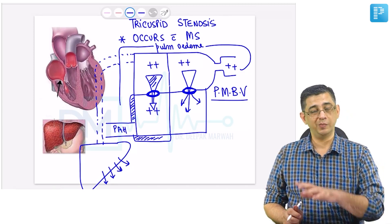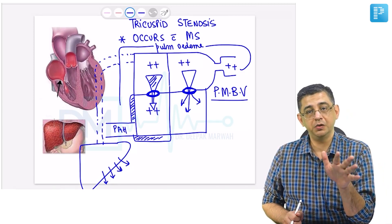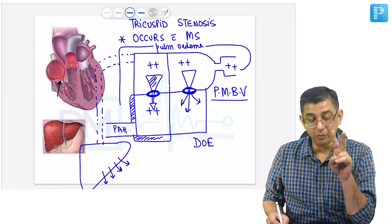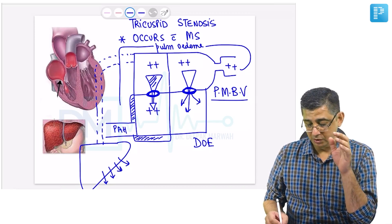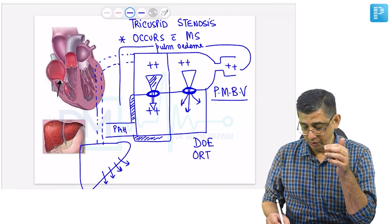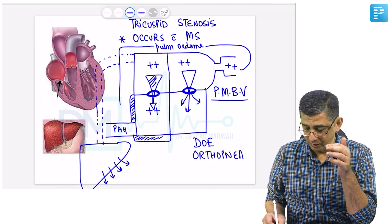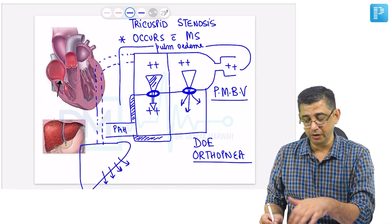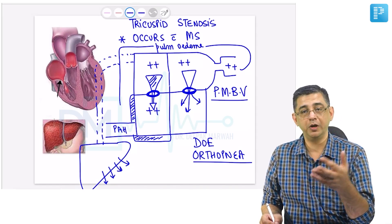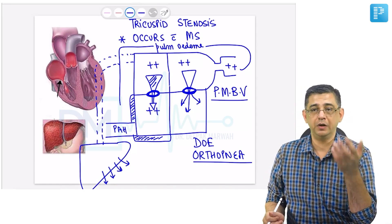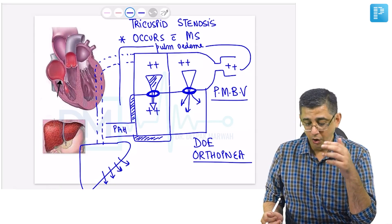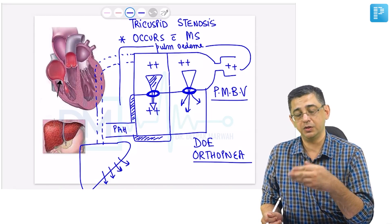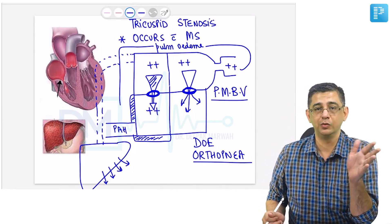If the patient is having MS and TS together, mostly the symptoms of MS will be predominating. Initially, when patients present with a combination of the two lesions, most would be having dyspnea on exertion and orthopnea, which are so prominent that you will mainly pay attention to the pulmonary edema component. Echocardiography will pick up mitral stenosis, and tricuspid stenosis may or may not be picked up at that point because it may not be that severe initially, or because the radiologist was more focused on the left side.